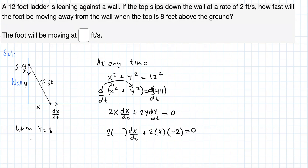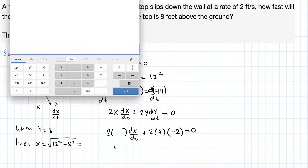Now, when y is equal to 8, right? If you look at this right triangle, then because of the theorem of Pythagoras, x should be equal to the square root of 12 square minus 8 square minus 8 square, right?